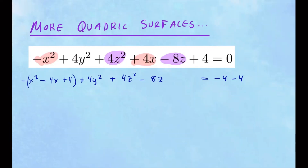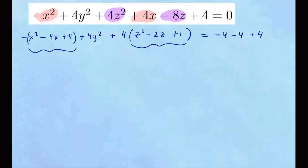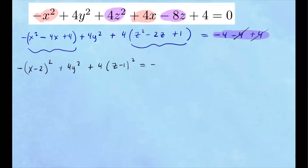For the z variable, we need to factor out a 4 from both terms. So that can be written as 4 times (z squared minus 2z) — leave a space — because if you redistribute, you'll get negative 8z. Now we take half of the linear term: half of negative 2 is 1; when you square it, you get 1. So we add 1 inside. But overall, we added 4 times 1, so I need a plus 4 on the right-hand side. The x variable factors into (x minus 2) squared; carry out the negative sign; plus 4y squared. And the z variable factors into (z minus 1) squared. These constants combine: the plus 4 and minus 4 cancel, leaving just negative 4.